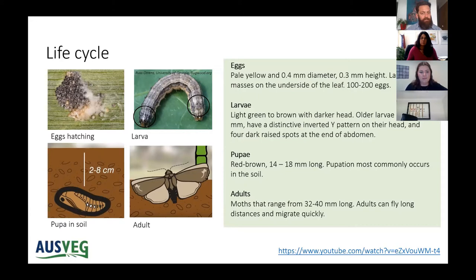Pupation occurs in the soil but sometimes in the leaf litter. Adults are moths with a wingspan ranging from 32 to 40 millimetres. They can fly long distances and migrate quickly, which unfortunately assists with their easy spread. There's a YouTube link here to a video of the life cycle of a fall armyworm on maize, which is quite an interesting depiction of how the life cycle works.